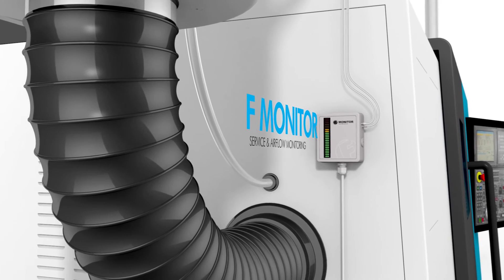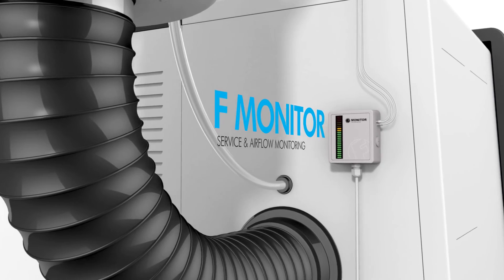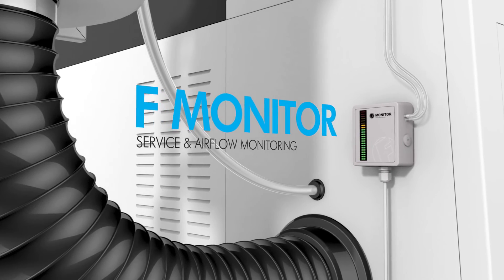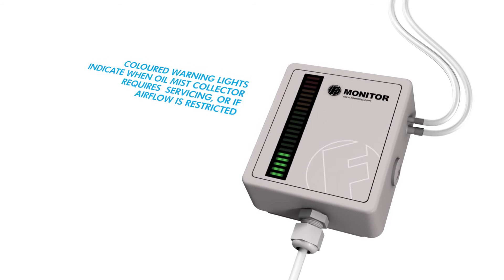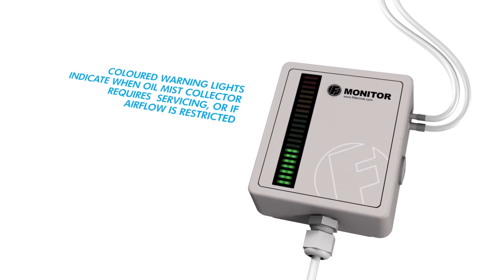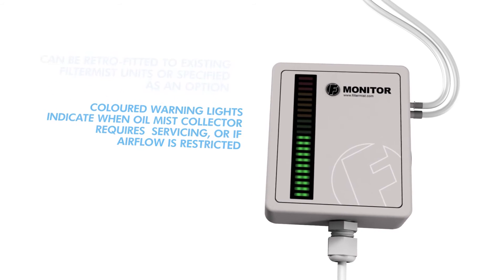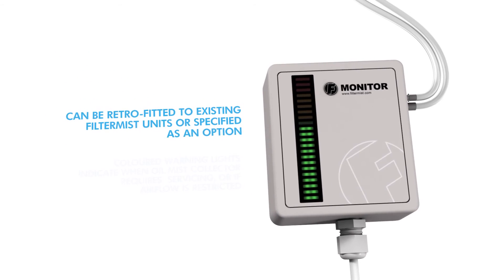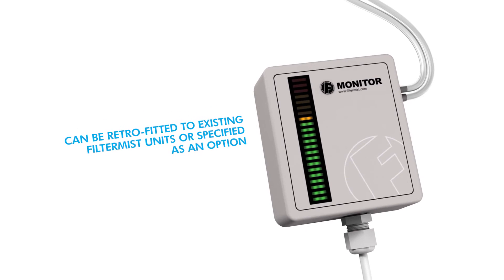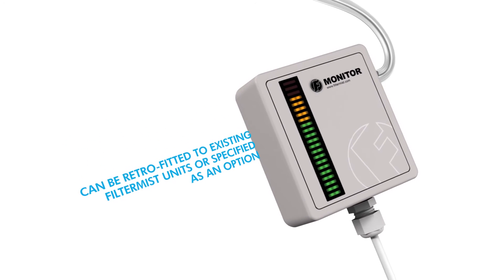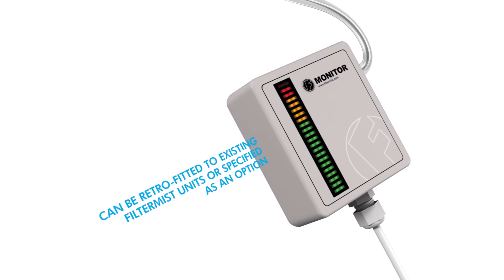For added peace of mind, Filter Mist has introduced F-Monitor, a new automatic dual monitoring system that uses coloured warning lights to advise machine operators when an oil mist collector needs servicing or if there are any blockages in the system restricting the airflow. F-Monitor can be retrofitted to the complete Filter Mist range and is sold as an optional accessory on all our oil mist collectors.